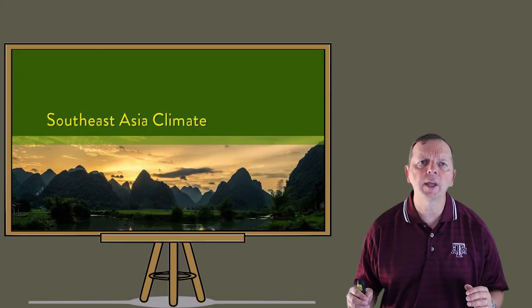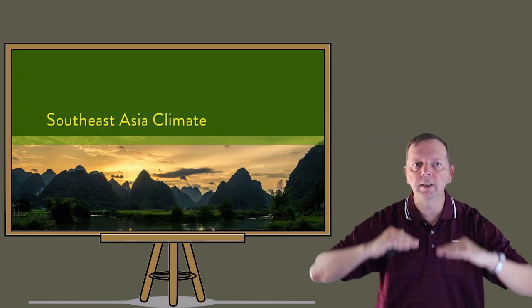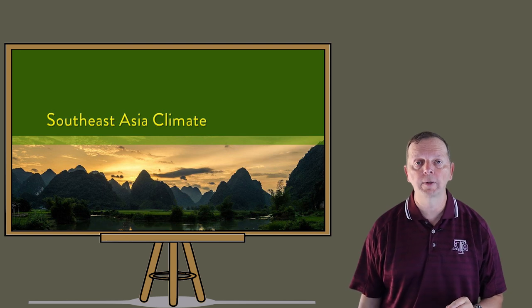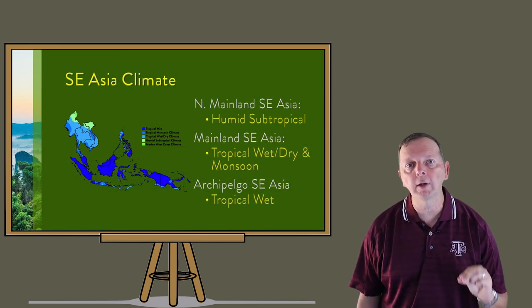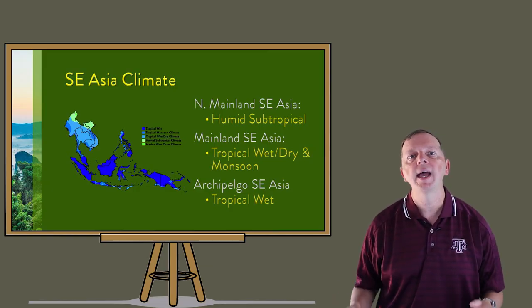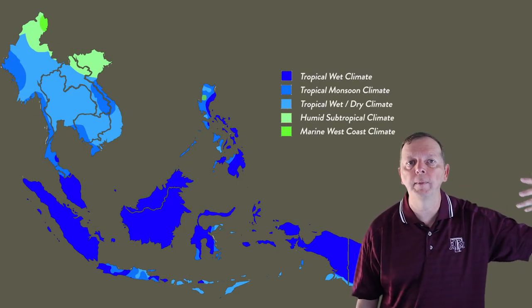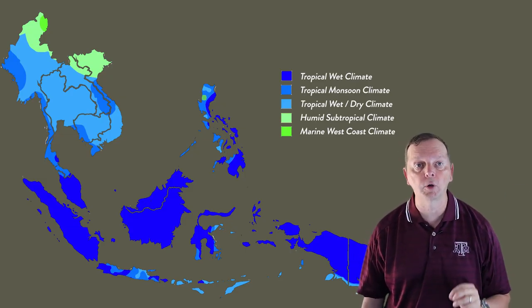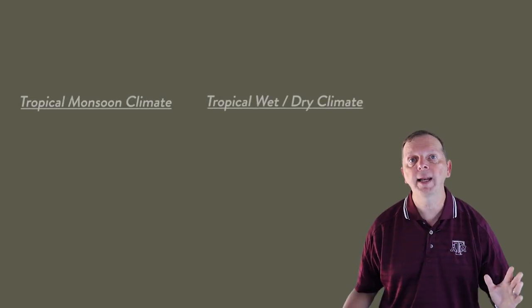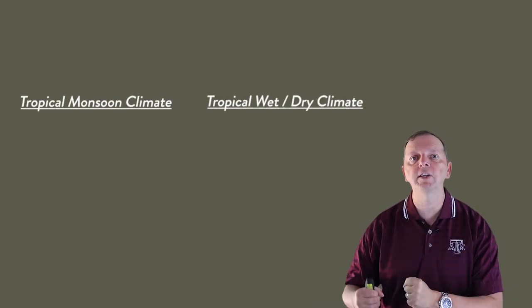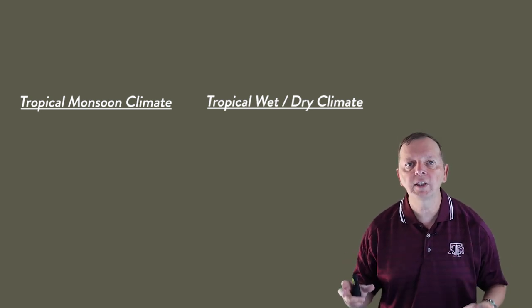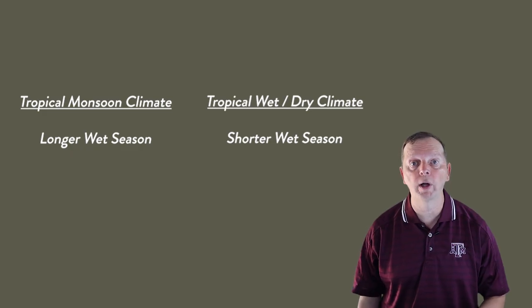If Southeast Asia stretches from 30 degrees north latitude to 10 degrees south latitude, it should be easy to determine what type of climates these places have — they have tropical climates. Indonesia and most of the Philippines are primarily a tropical wet climate, and most of the mainland of Southeast Asia has either a tropical monsoon or a tropical wet-dry climate. As we go into the northern portions of Myanmar and Vietnam, we find a humid subtropical climate, just like what we have in Bryan, Texas. Both tropical monsoon and wet-dry climates have a wet season and a dry season.